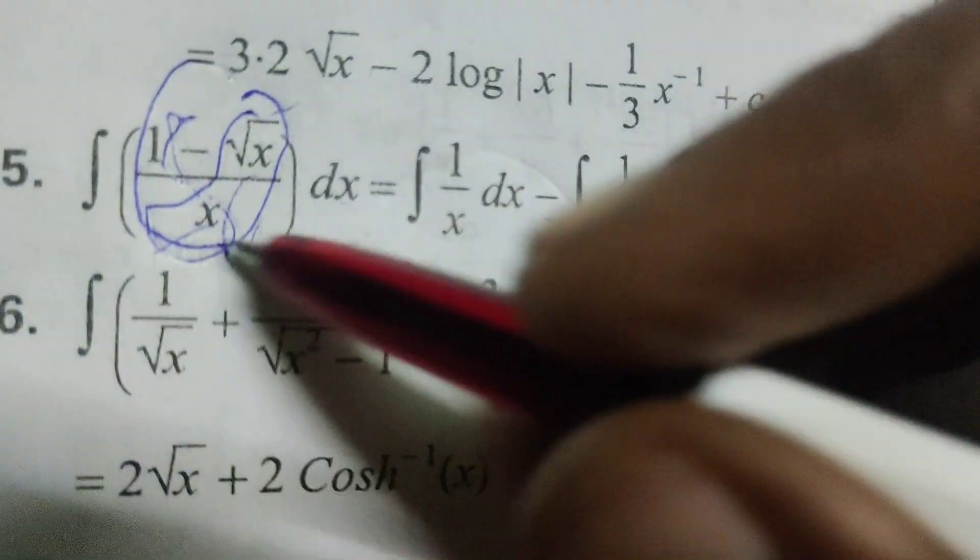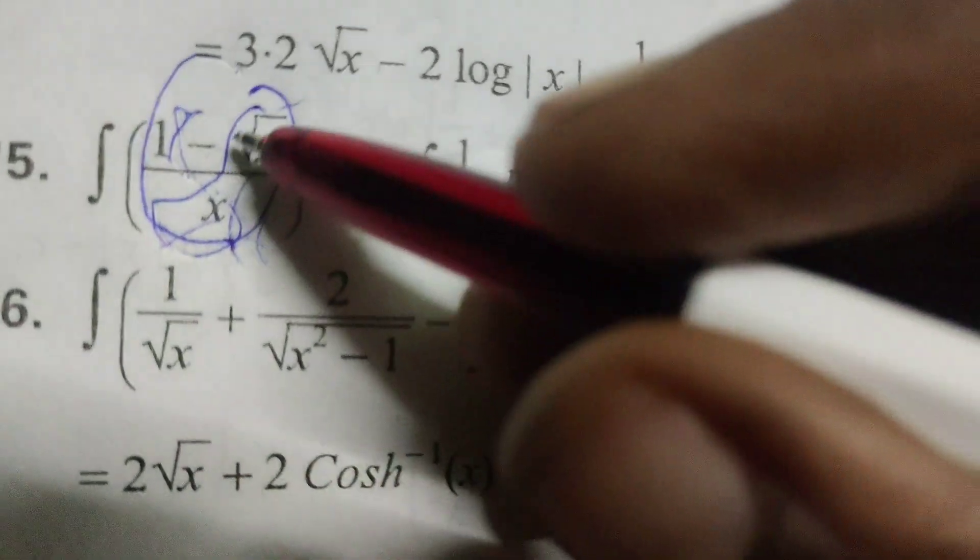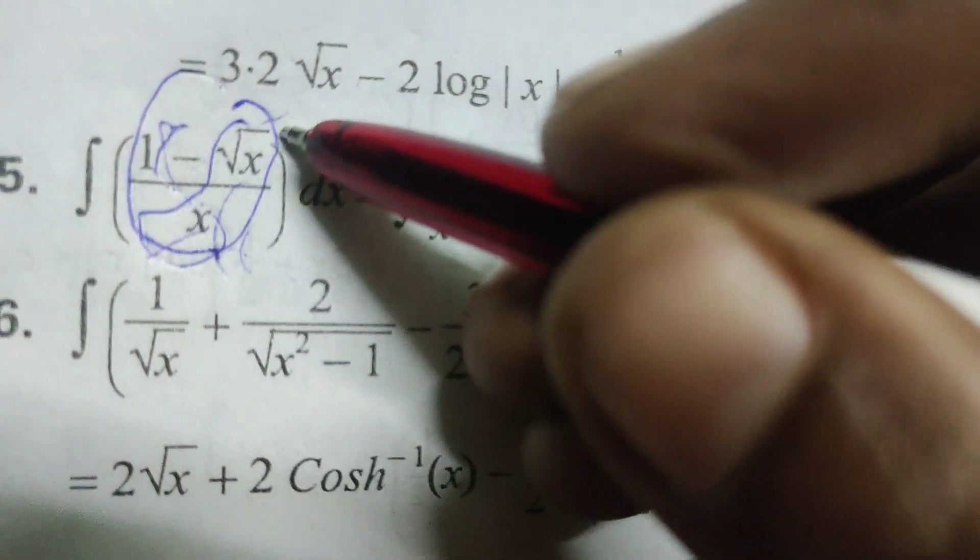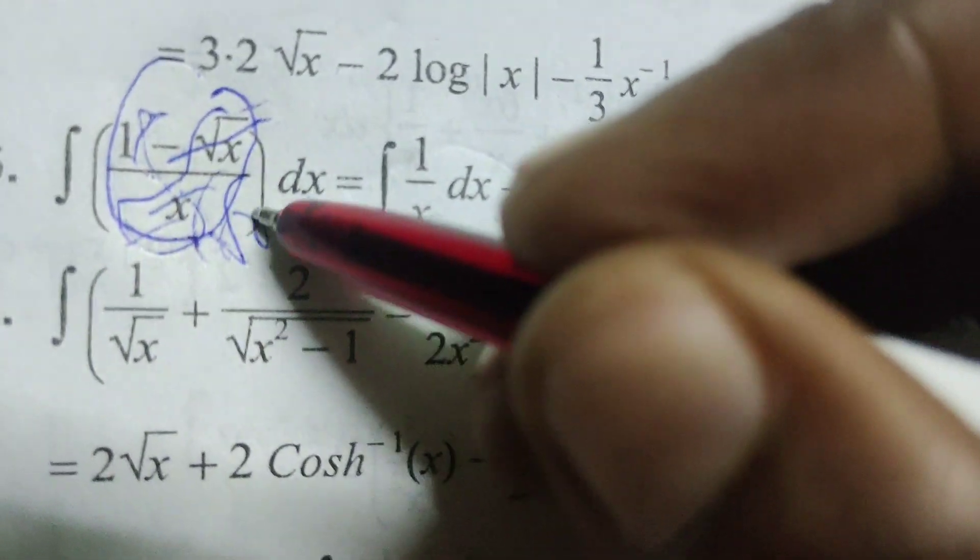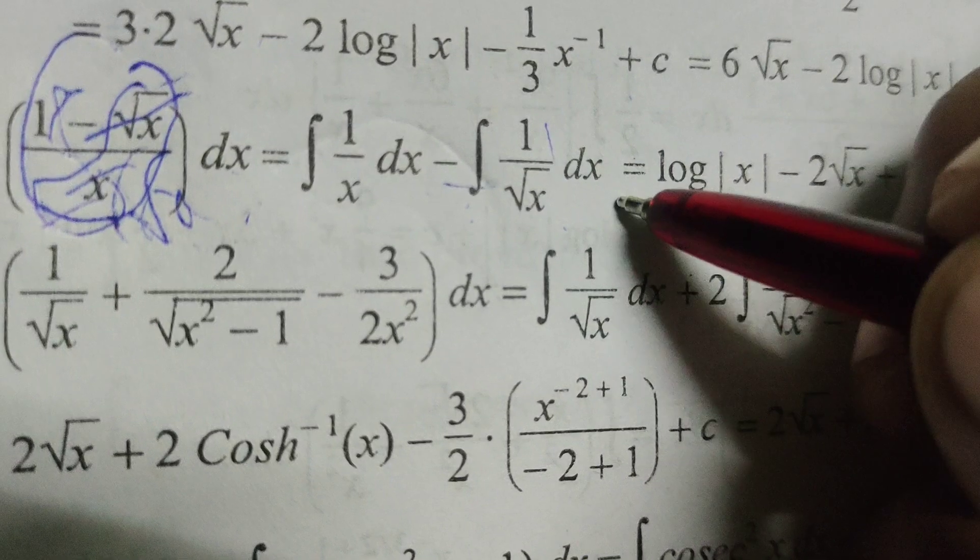Therefore, integral of 1 by x dx minus integral of root x by x. That is, canceling will get denominator means root x minus integral of 1 by root x dx.